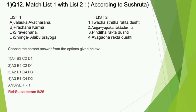Question number 12 is a direct question from Sushruta Siravyadhavidhi Shariram. Jalaukavacharana is done in Avagadha Raktadushti, Prachhana Karma in Pindita Raktadushti, Siravyadhana in Angaviyapaga Raktadushti, and Shringalabu Prayoga in the remaining type of Raktadushti. The correct answer is option 1.